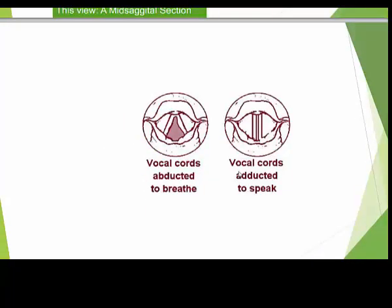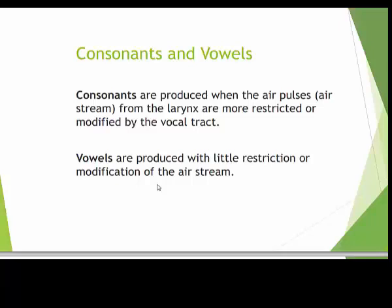Just a word on the vocal cords — they're actually flaps of tissue housed inside of the larynx, also called the voice box. Your Adam's apple is actually a shield of cartilage that protects your larynx.